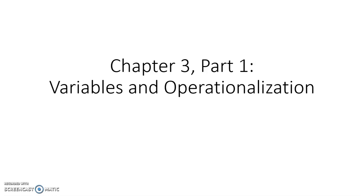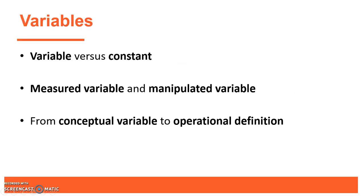Okay, so Chapter 3. This will form a foundation for a lot of the rest of the material that we discuss on claims and validities. First we need to lay some groundwork talking about variables and how to operationalize variables. We'll talk about the differences between a variable and a constant, a measured variable versus manipulated, and then how we go from a conceptual variable or concept to an operational definition, something that can actually be measured experimentally.